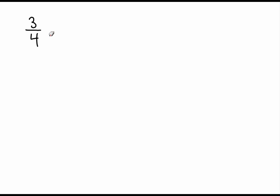Let's write down an example. We've got three quarters — the eraser icon is flashing but let's just see what happens — three quarters multiplied by two fifths.